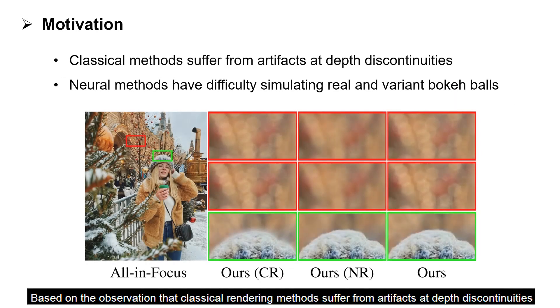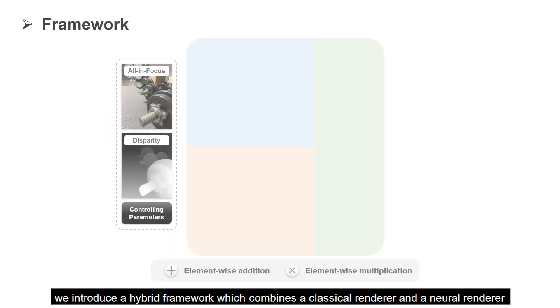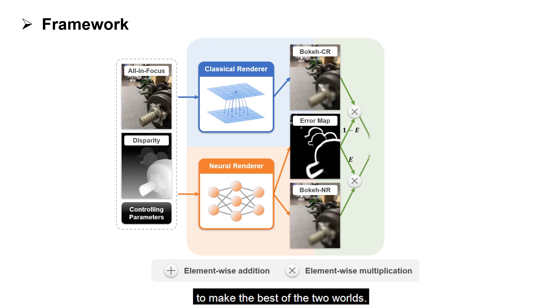Based on the observation that classical rendering methods suffer from artifacts at depth discontinuities, while neural rendering methods have difficulty simulating real and variant bokeh balls, we introduce a hybrid framework which combines a classical renderer and a neural renderer to make the best of the two worlds.